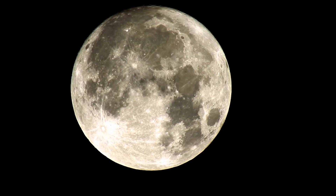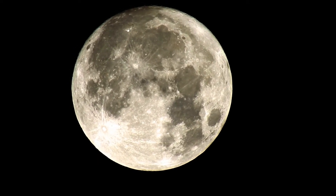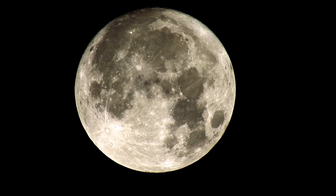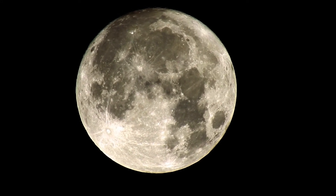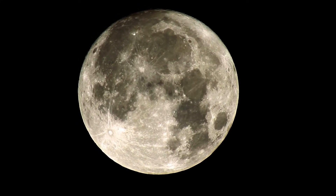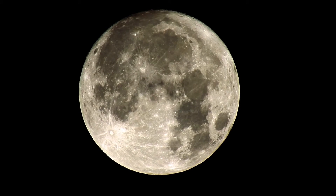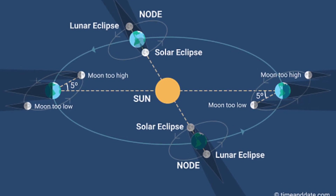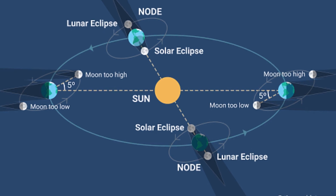Throughout every lunar month, the distance between our planet and the moon varies because the shape of the moon's orbit around the earth is elliptical rather than circular. The reason we can see the glowing outer edge of the sun at the maximum point of an annular eclipse is that it happens while the moon is near its farthest point from earth, called apogee.